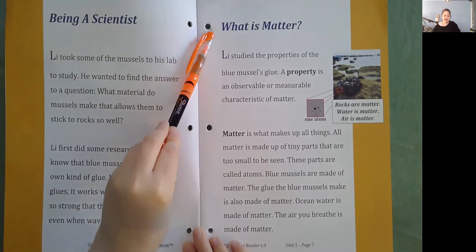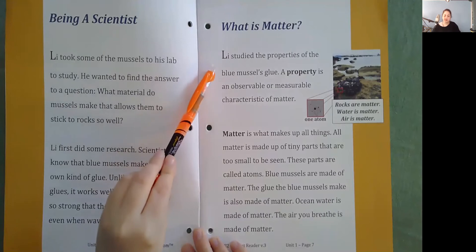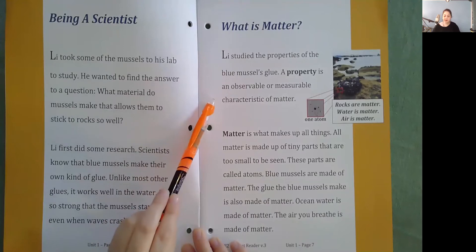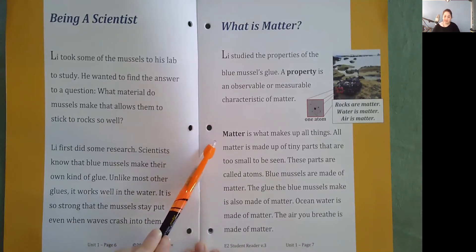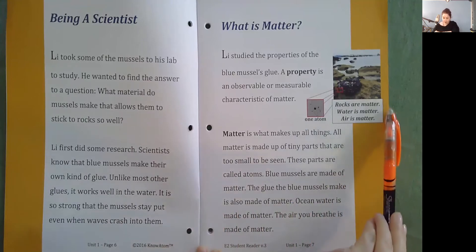What is matter? Li studied the properties of the blue mussels glue. A property is an observable or measurable characteristic of matter. Matter is what makes up all things. All matter is made up of tiny parts that are too small to be seen. These parts are called atoms. Blue mussels are made of matter. The glue the blue mussels make is also made of matter. Ocean water is made of matter. The air you breathe is made of matter. Rocks are matter. Water is matter. Air is matter.